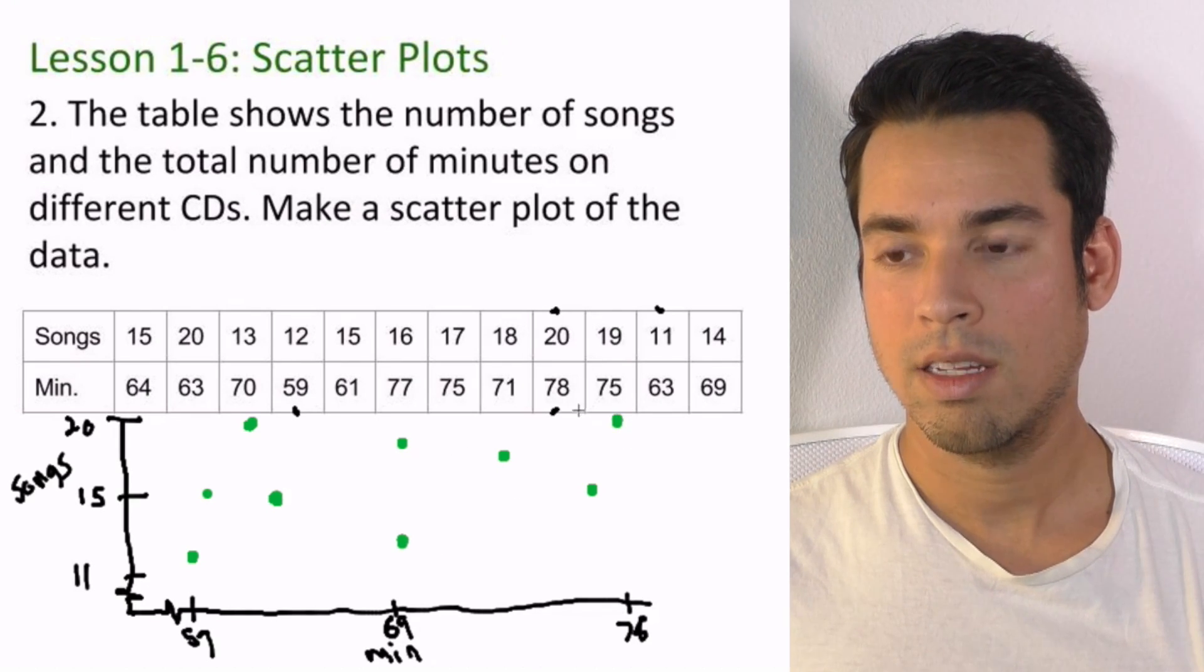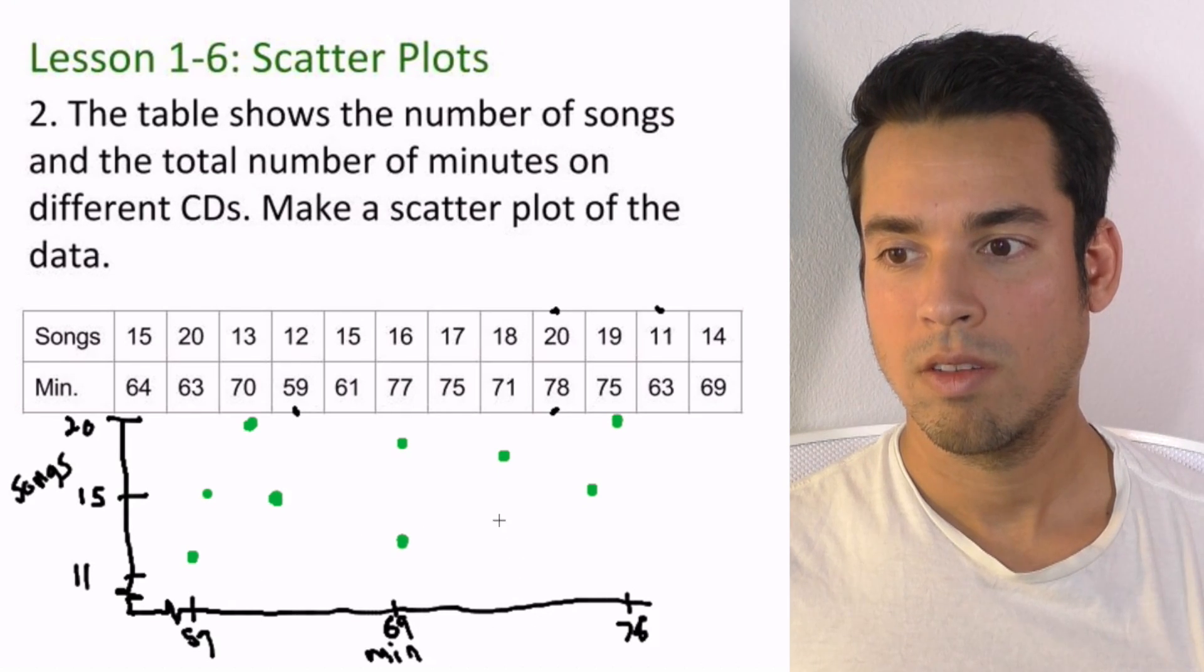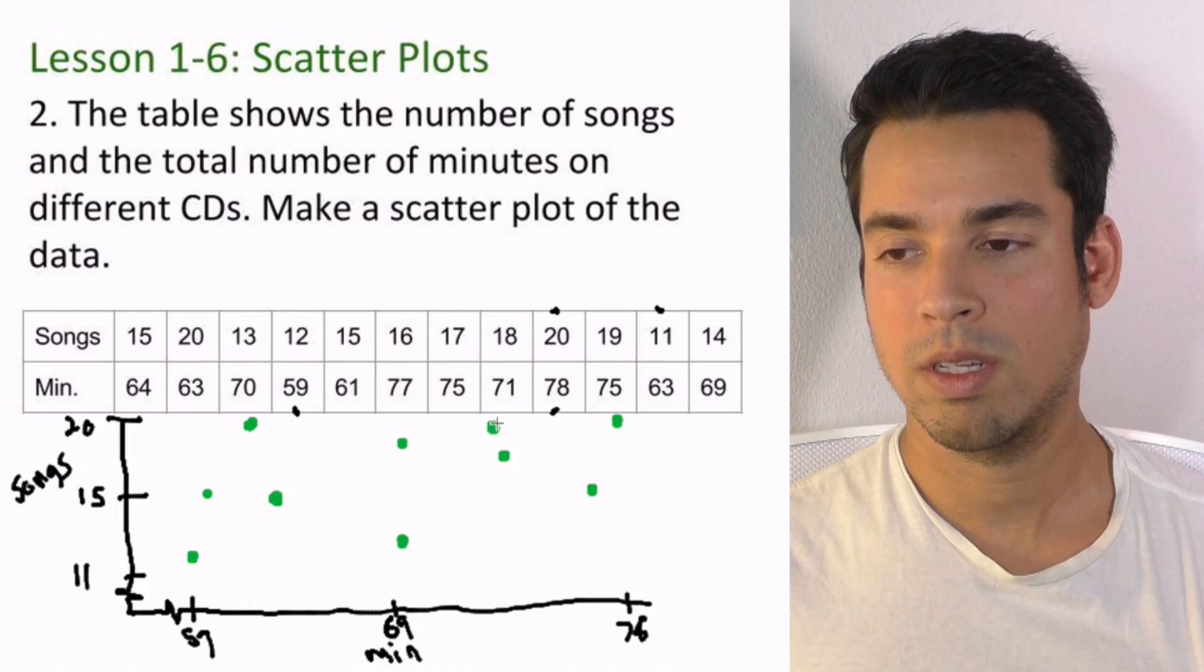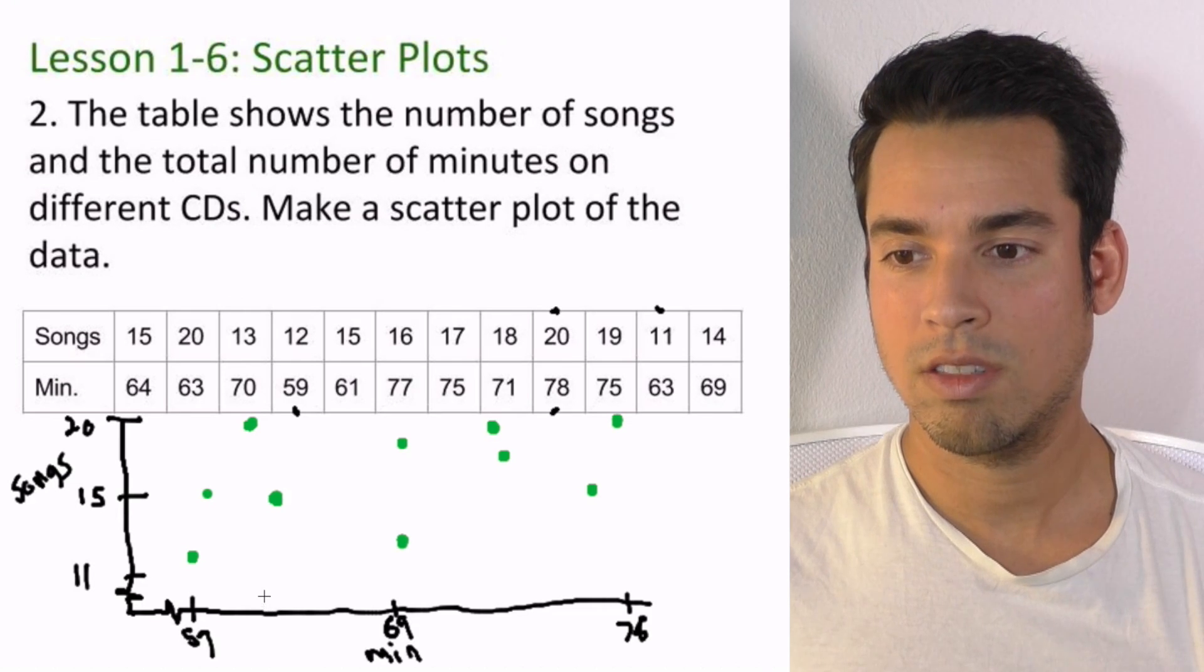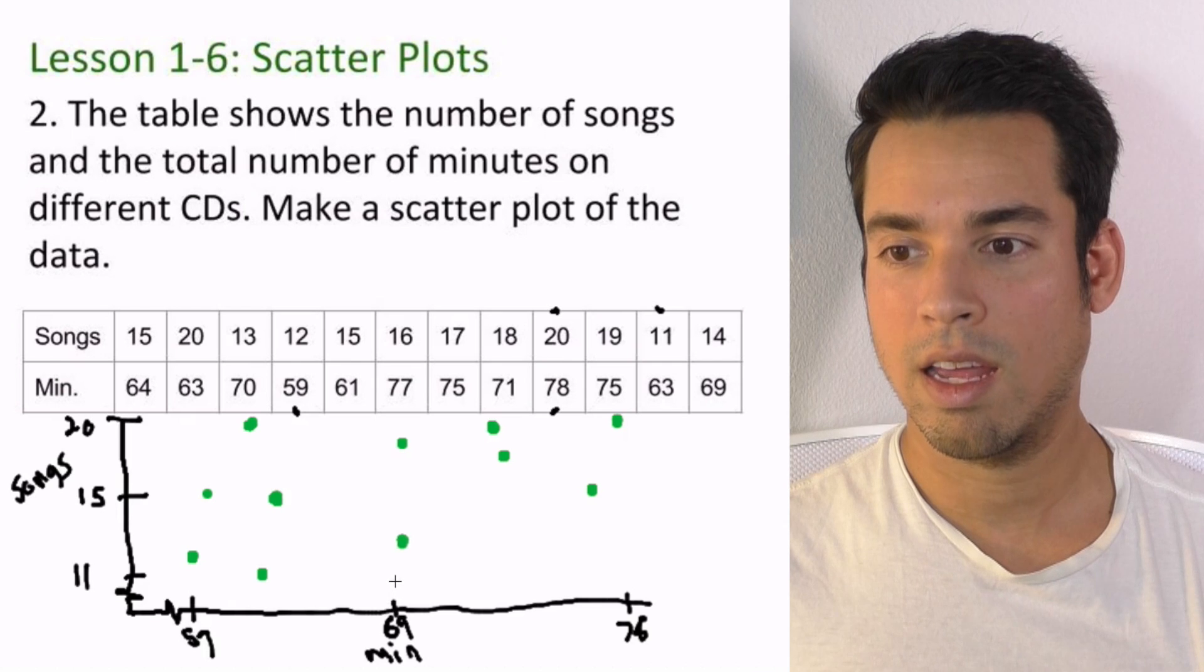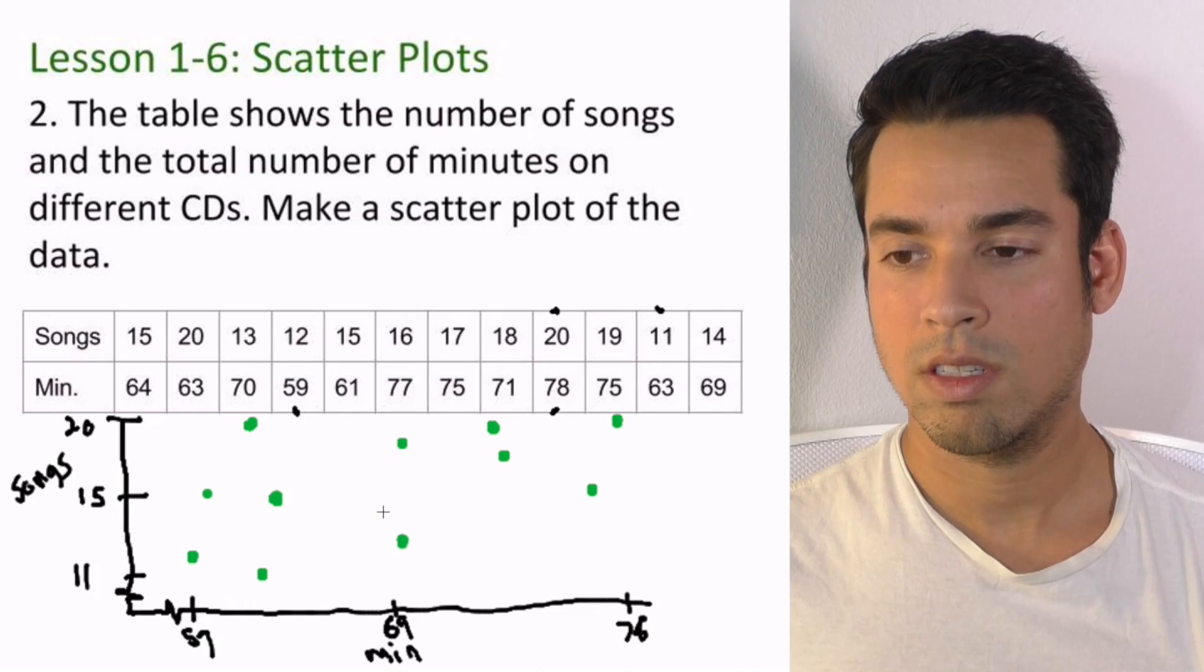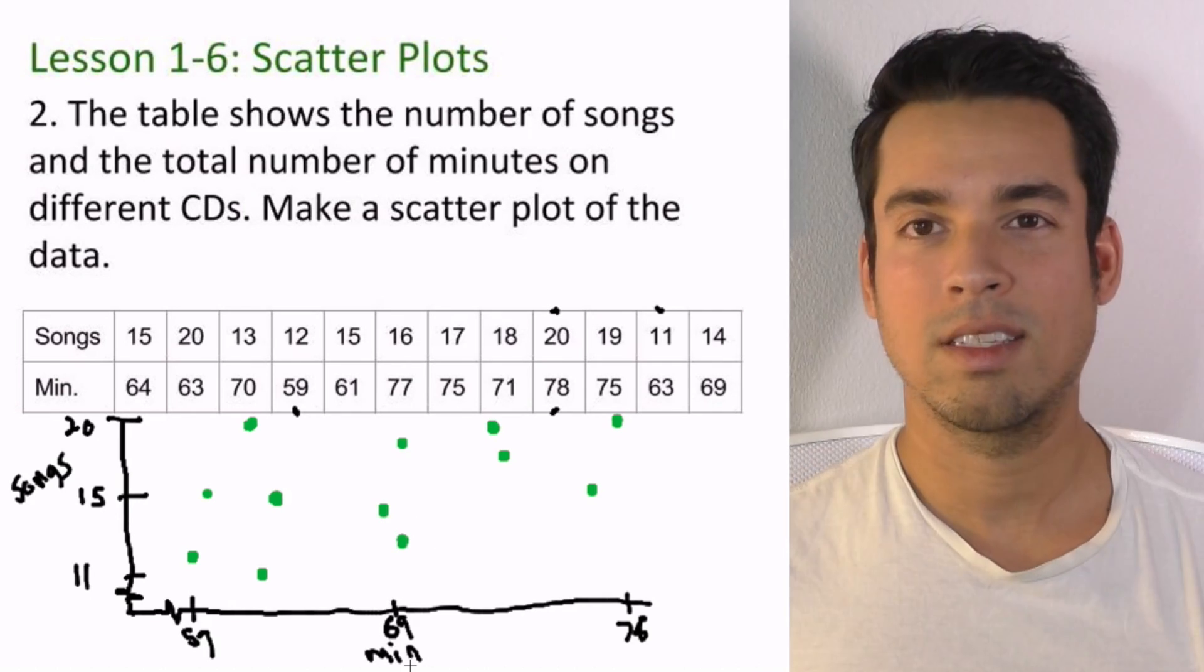71 and 18, which is maybe like this. 78 and 20, all the way over here, all the way at the top like that. 75 and 19 right here. These are rough - I mean I'm not doing it exactly in the right spot, but I'm getting pretty close. 63 and 11. Hopefully you'll be doing it a little bit more accurately. 63 and 11, and 69 and 14. So this gives you an idea. That's it, that's how you make a scatter plot.